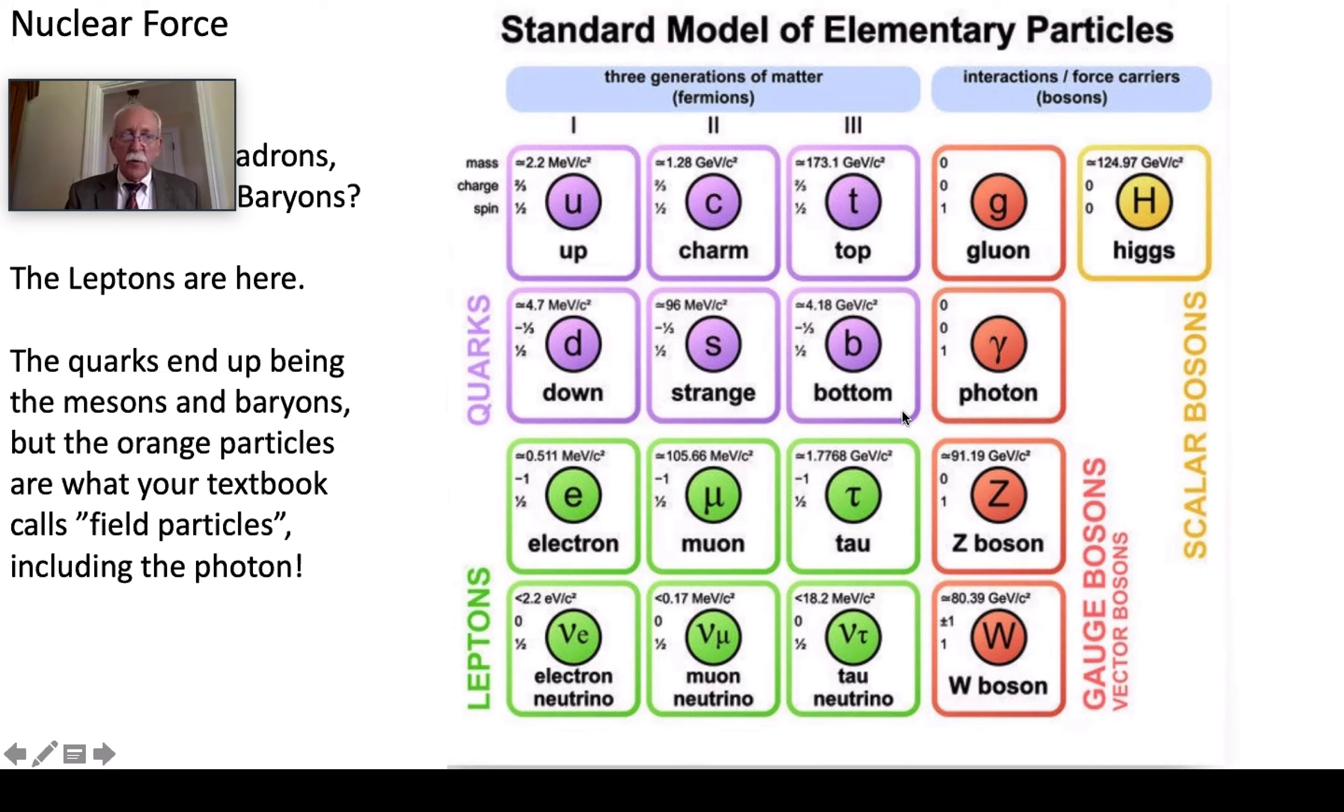Your textbook refers to these other things in orange as field particles. And that includes the photon. And we'll find that these are the things that exchange properties between particles. And then you've got the Higgs boson. And the Higgs is the interaction mechanism, a particle that brings about the origin of mass itself from energy. It isn't everything doesn't have a Higgs. It just brings about that particular field.